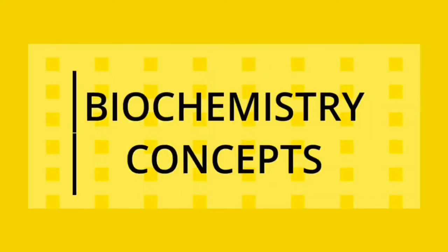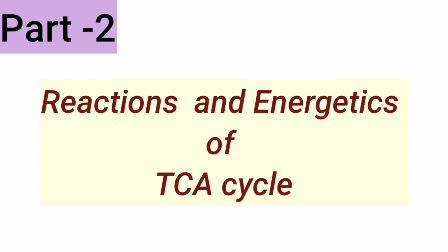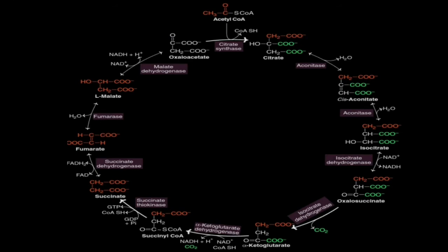Welcome to Biochemistry Concepts. This part covers TCA cycle reactions and energetics. The TCA cycle starts with condensation of acetyl-CoA with oxaloacetate — the first reaction catalyzed by citrate synthase. The 2-carbon compound acetyl-CoA plus the 4-carbon compound oxaloacetate condense to form the 6-carbon compound citrate, and coenzyme A is released.